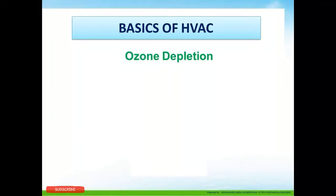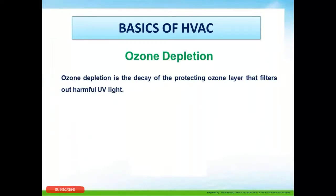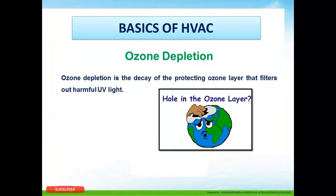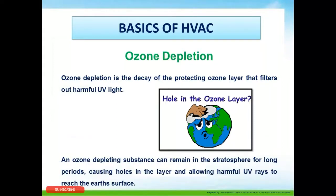Now let us understand ozone depletion and why it matters. Ozone depletion is the decay of the protective ozone layer that filters out harmful UV light from the sun. Due to the chlorine mixtures in CFC and HCFC refrigerants, the ozone layer has been damaged and holes have formed. Ozone depleting substances can remain in the stratosphere for long periods, causing holes that allow harmful UV rays to reach the Earth's surface.